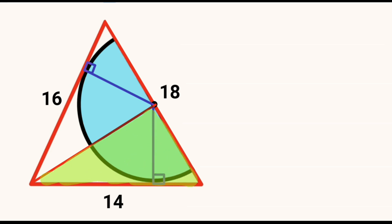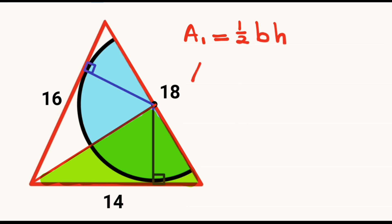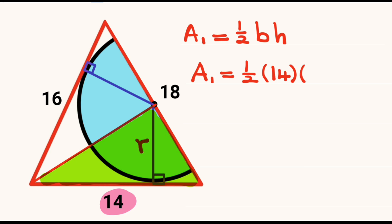We have the first part which is shaded in green and we calculate this area and we call it Area 1, which will be equal to half multiplied by base multiplied by height. Area 1 will be equal to half multiplied by the base which is equal to 14, and the height perpendicular to the base will be equal to the radius R. So Area 1 equals 7R.